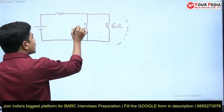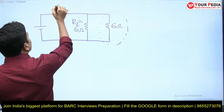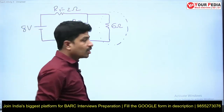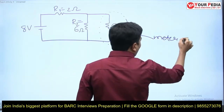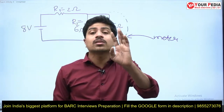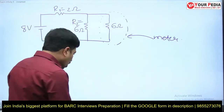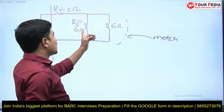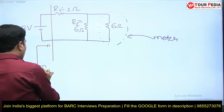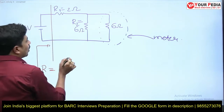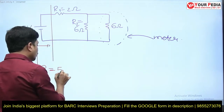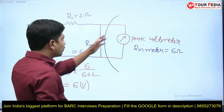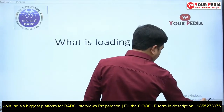The meter resistance (6Ω) is in parallel with the actual R2 (6Ω), and R1 = 2 ohms with an 8 volt source. The purpose of the meter is to measure the voltage across R2. Now, the impedance seen by the source is 6 in parallel with 6 = 3 ohms, and 3 + 2 = 5 ohms.